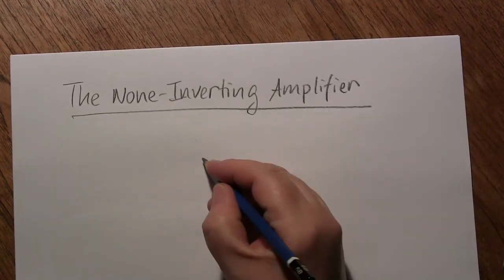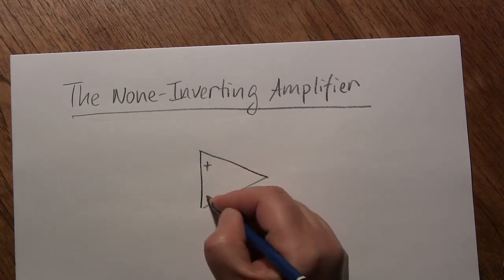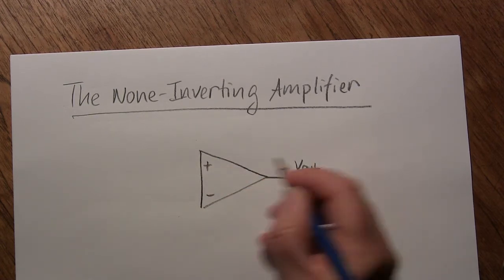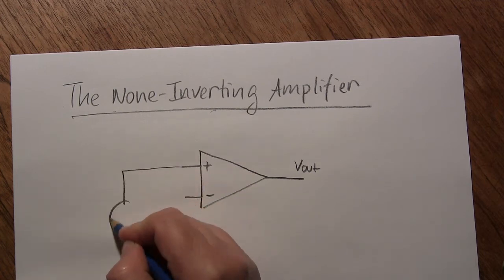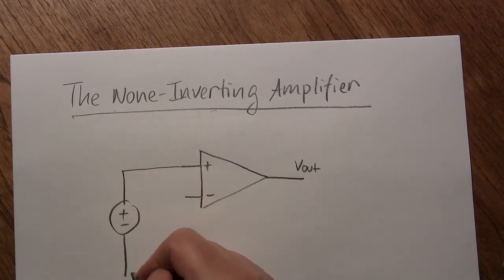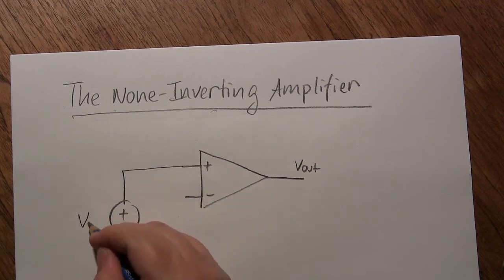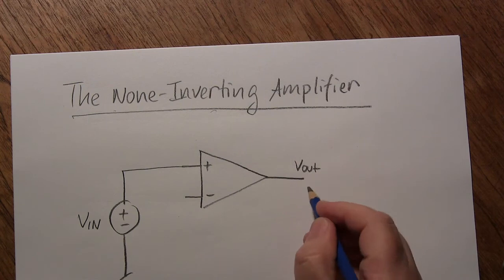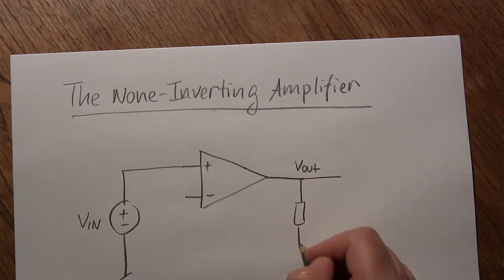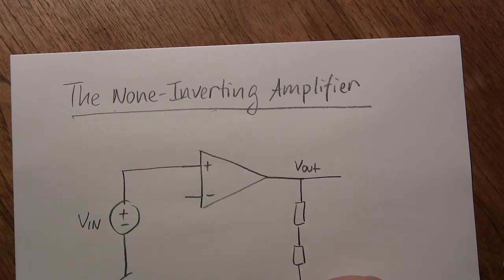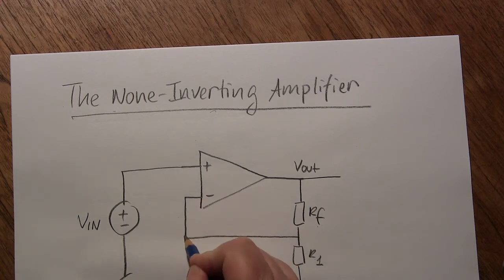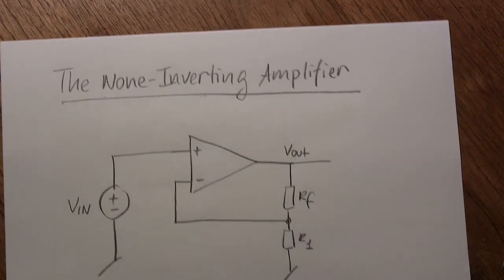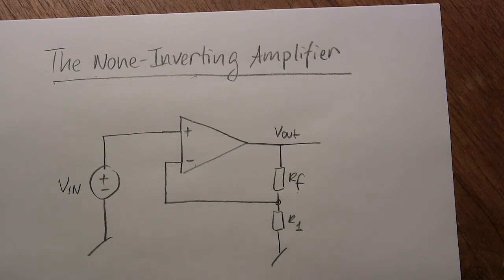First, we draw the op-amp. And since it is a non-inverting amplifier, it means that we actually connect the sensor, or our useful input signal, to the non-inverting input, VIN. And to the output we will have two resistors in series to ground, R1 and RF. And we will connect the midpoint between them to the inverting input. So this is the non-inverting amplifier circuit.